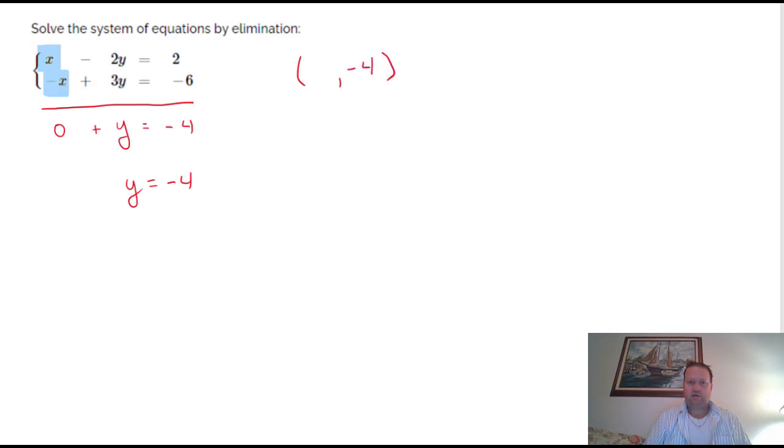So, elimination tends to work a little bit quicker on some of these easy problems. I'm probably just going to put it into the top equation. I see x minus 2y. Let's try x minus 2y equals 2. But in place of y, I'm going to put that negative 4. And a negative 2 times a negative 4 is plus 8. x plus 8 equals 2. And if I take away 8, I get my solution for x. x is negative 6.